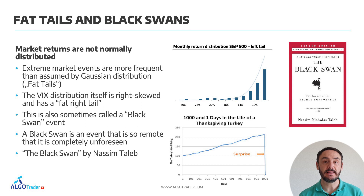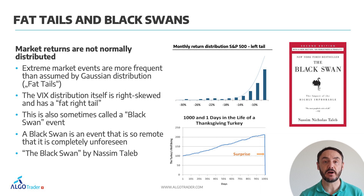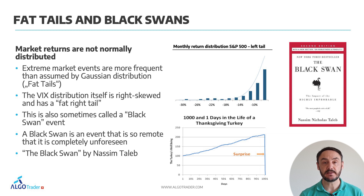Let's also talk a little bit about fat tails and black swans. As we all know, market returns are not normally distributed. Extreme market events are more frequent than assumed by the Gaussian distribution — this is called fat tails. The VIX distribution itself is right-skewed and has a fat right tail, meaning that spikes in the VIX index happen more frequently than they should. This is also sometimes called a black swan event.